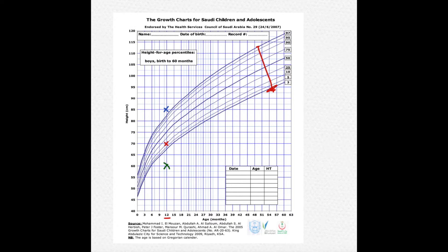So how do we interpret this? You can see the band between these two lines — this is the normal range. Whatever is displayed inside here, whether it's an X or a dot, will be considered normal. So the child with the red X is normal. The child with the blue X is taller than normal, and the child with the green X is shorter than normal.